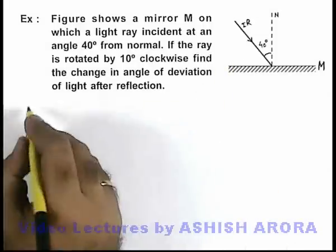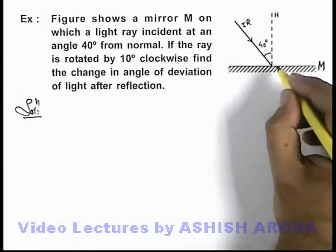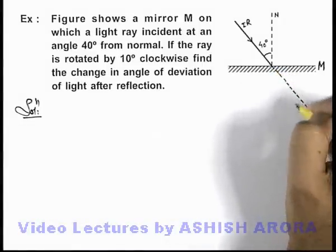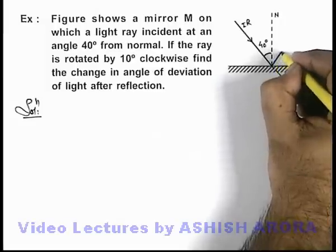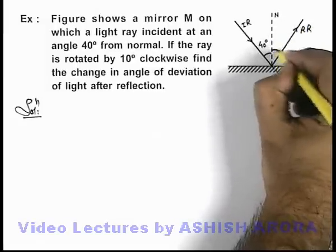In this situation, we can solve the problem in the given figure. The incident light is in this direction, and after reflection the light is going as reflected ray at an angle 40 degrees.